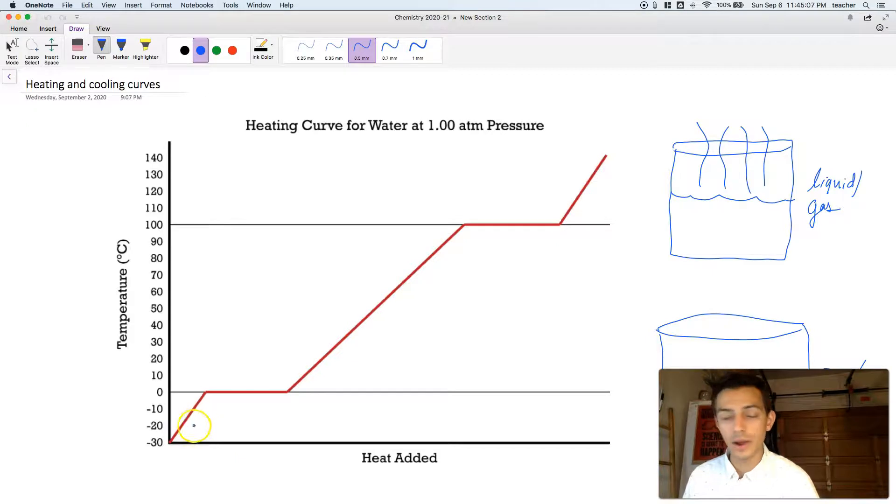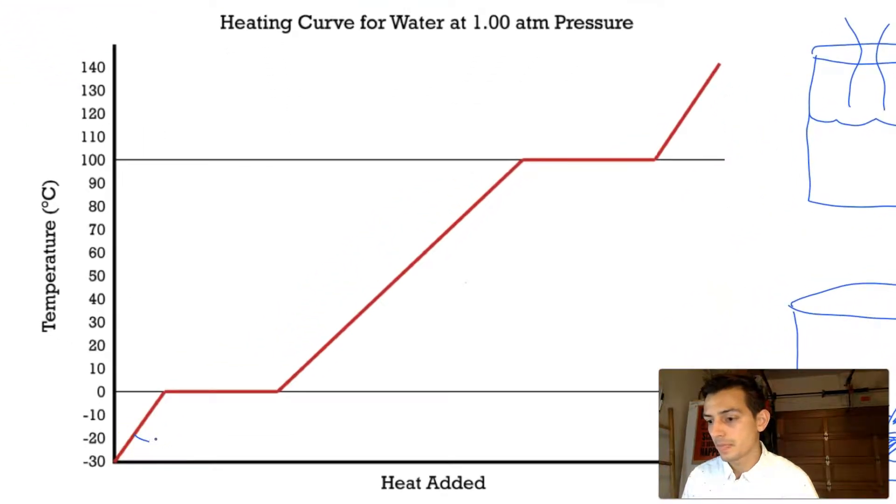Okay, this is solid ice, here is our liquid water, and this is our gaseous steam. Okay, so those are the three states.